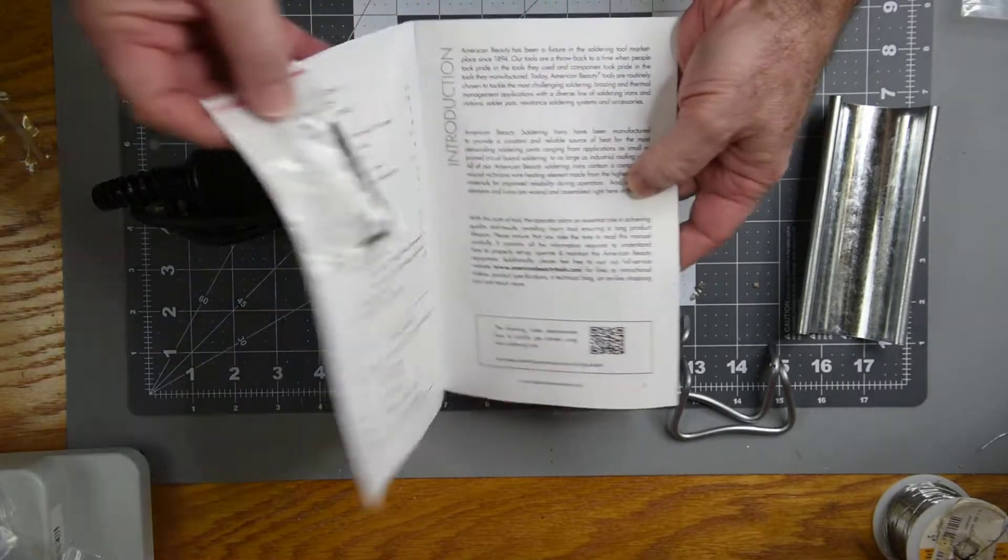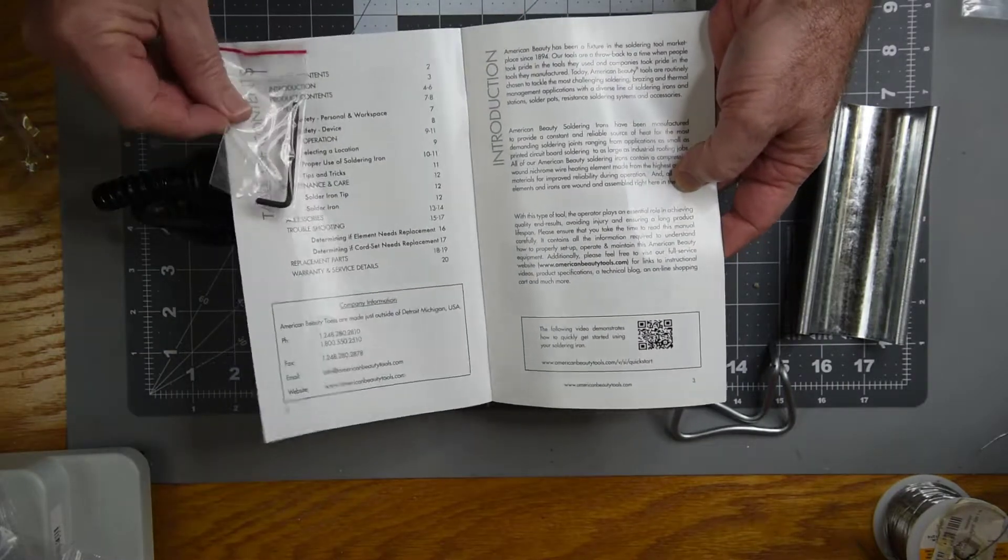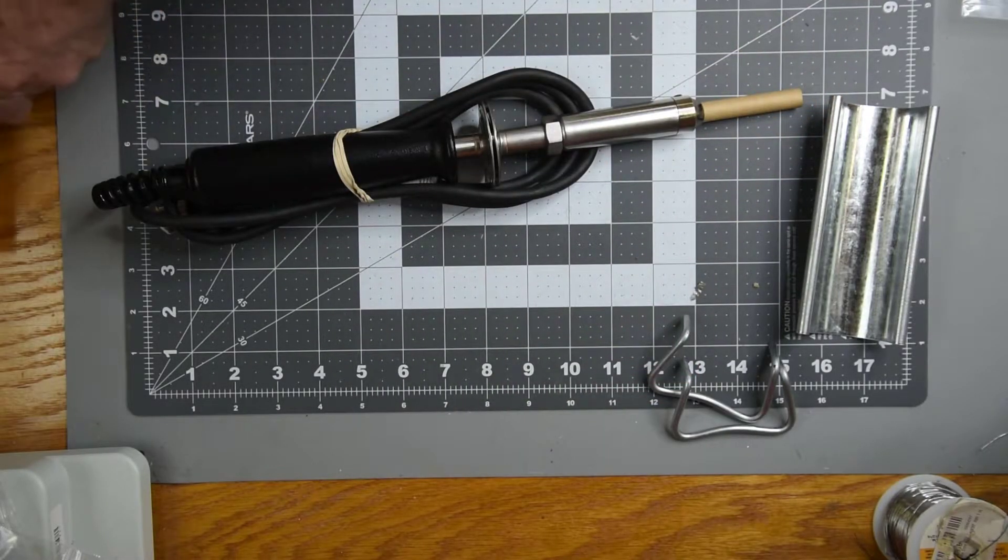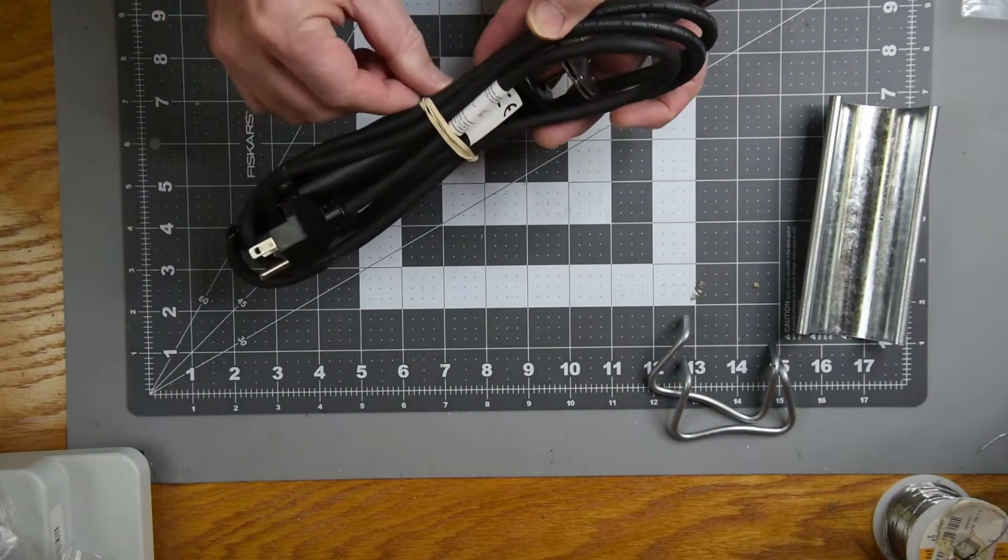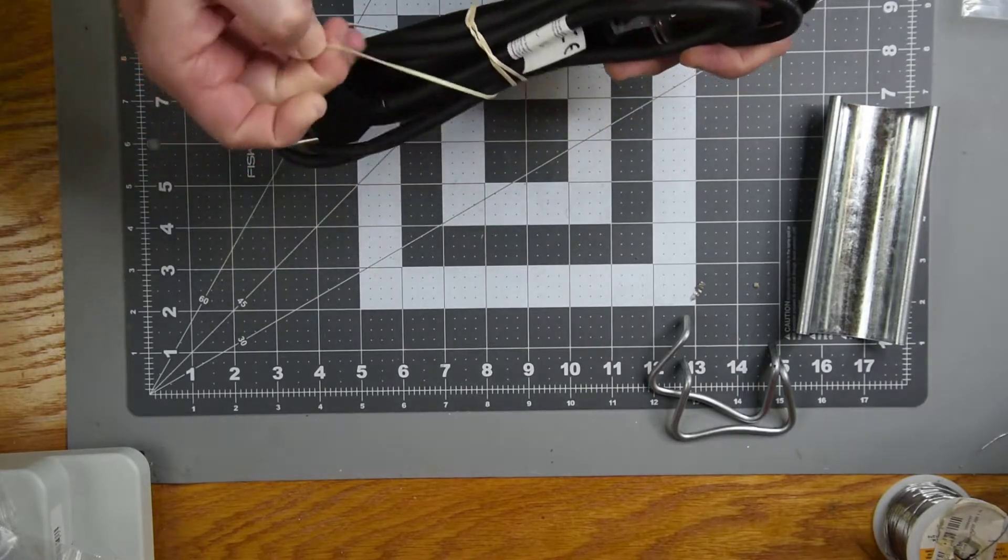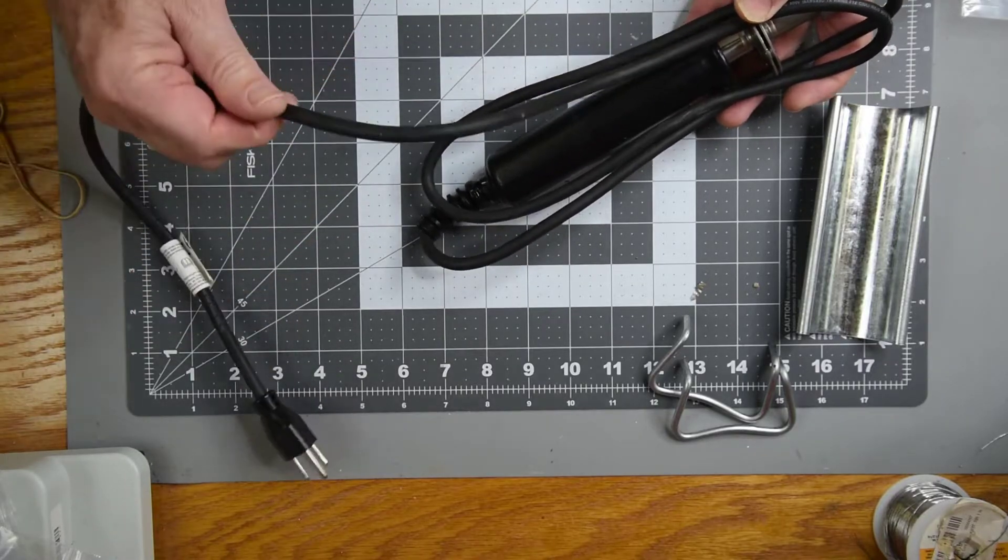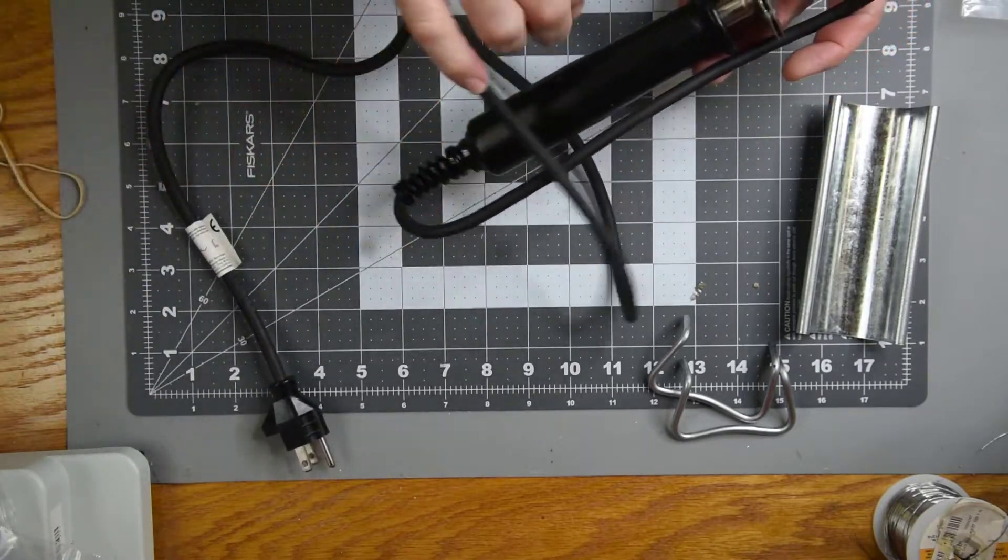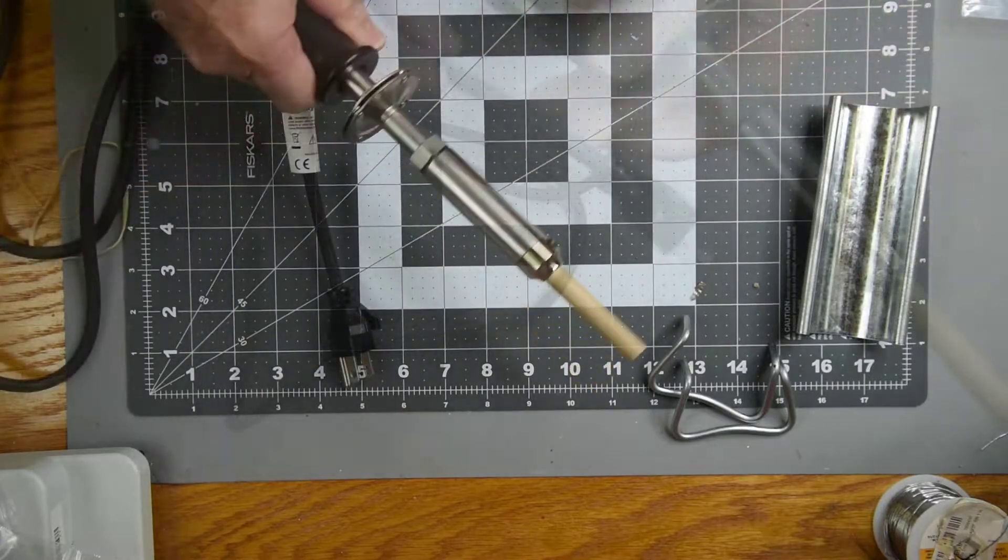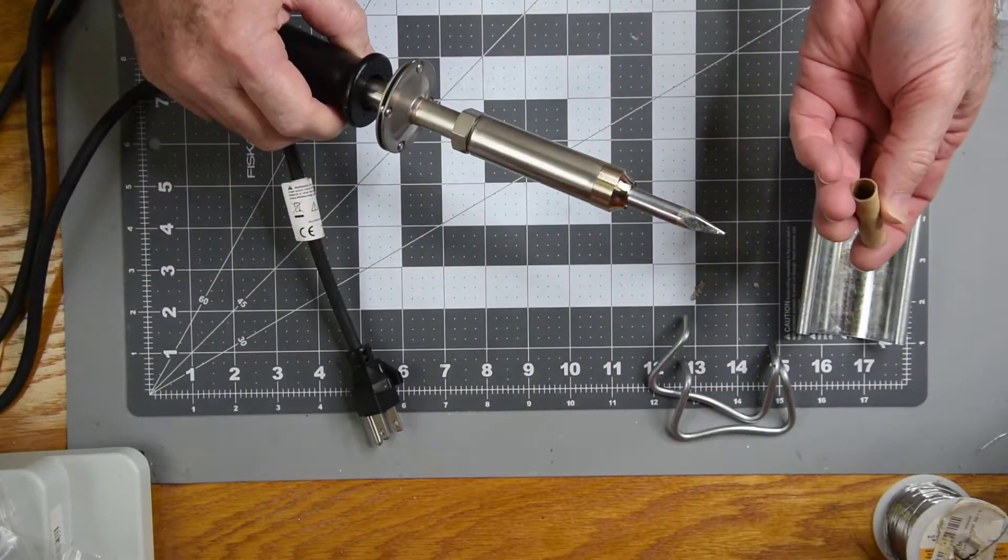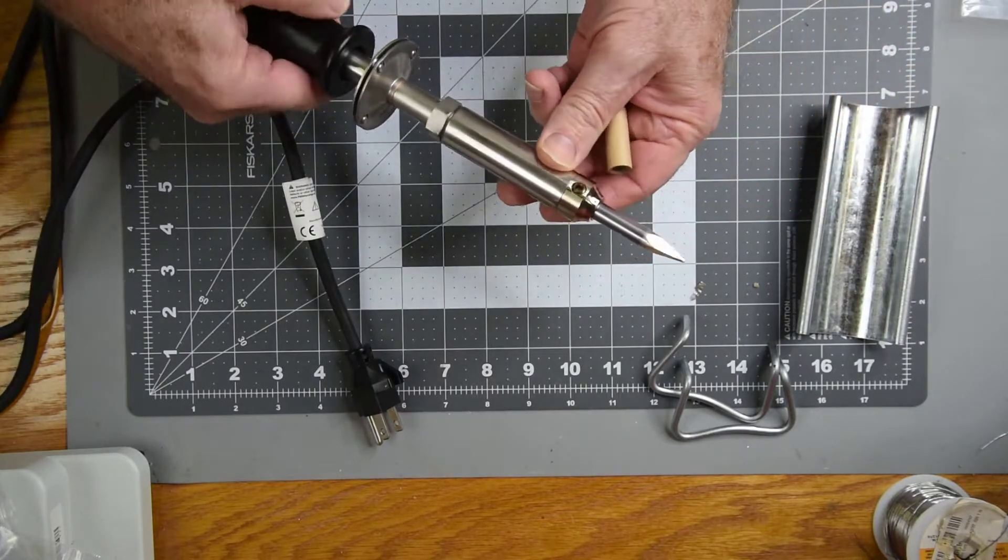A little instruction manual with an allen wrench stapled inside the front cover. The iron itself. Nice feeling cord, definitely not PVC, feels like rubber. It's got a bit of weight to it. Looks very nice.